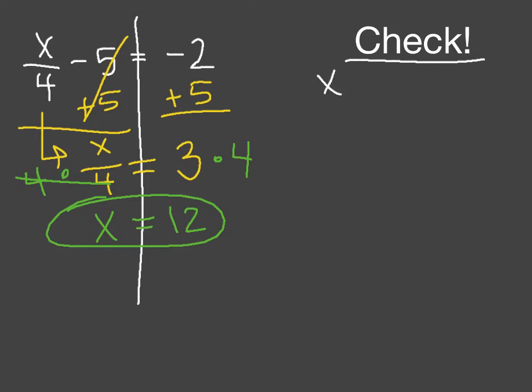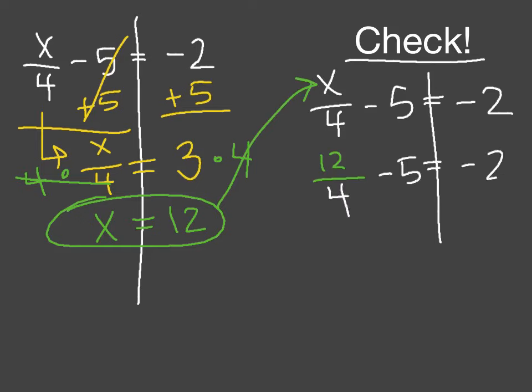But before I move on, I'm going to check. I'm going to make sure that my answer makes sense. So I'm taking the answer, x equals 12, and I'm plugging that in to where the x was in the original problem. Everything else is going to stay exactly the same though. And I'm going to calculate. Does this side, when I calculate it, make negative 2? Well, using order of operations, I know that 12 divided by 4 makes 3. Bring down all that other information. 3 minus 5 makes negative 2. Negative 2 does equal negative 2. That's what I needed it to do. So that's how I know my answer is correct.